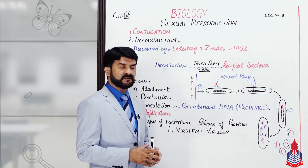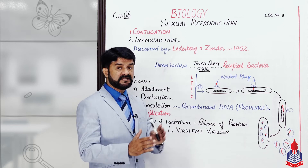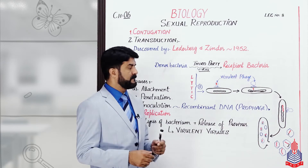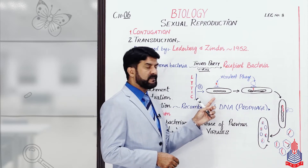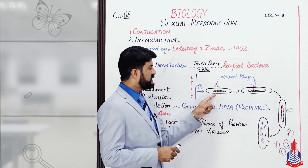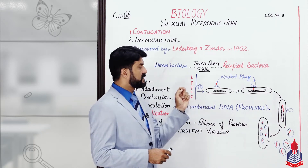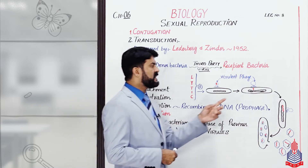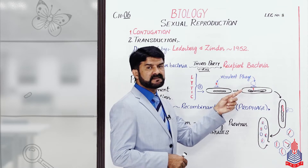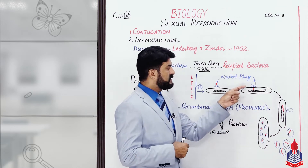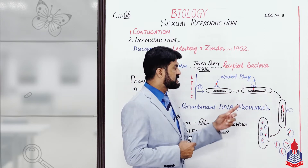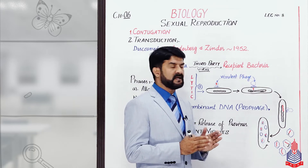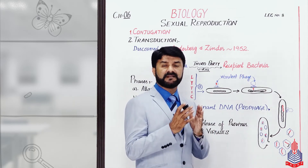اس particular virus کے پاس اپنا DNA یا RNA ہے جسے ہم نے red marker سے draw کیا ہوا ہے۔ جو bacterium کا DNA ہے اسے ہم نے black draw کیا ہے — Bacterial DNA is black and viral DNA is red۔ اگلی phase penetration ہے — اس میں virus اپنی tail کو compress کرتا ہے، جیسے injection کے through medicine ڈالتے ہیں، اسی طرح یہ والا virus اپنے DNA کو bacterium کی body میں inject کر دے گا using certain enzymes that can make hole in the walls of the bacterial body۔